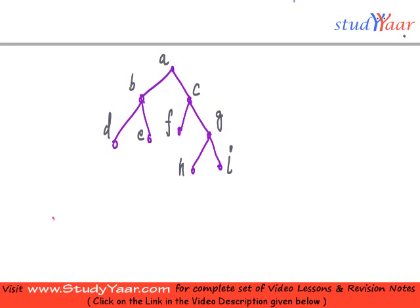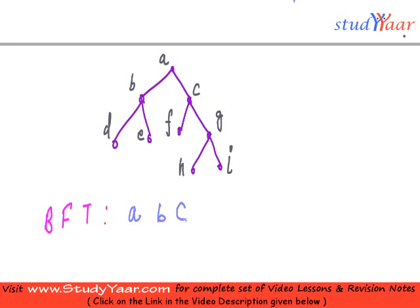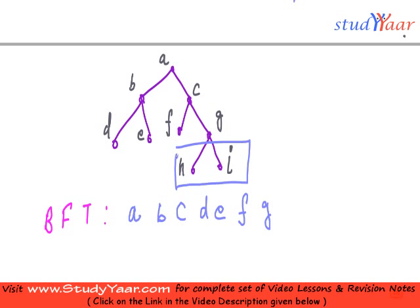For this tree, the breadth-first traversal works like this: first I process the nodes at the top level — so I process A. Then I process nodes at the next level from left to right: B, then C. Then I move to the next level: D, E, F, G. Then the final level: H and I. So this is your breadth-first traversal for this tree.